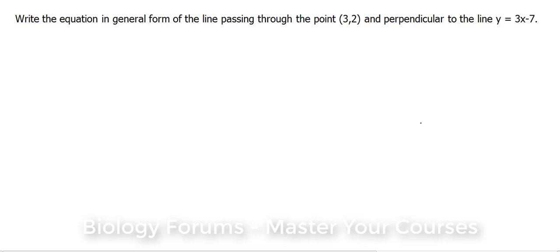Write the equation in general form of the line passing through the point (3,2) and perpendicular to the line y equals 3x minus 7.